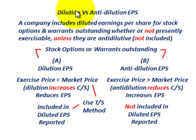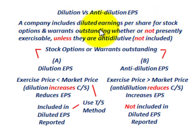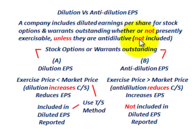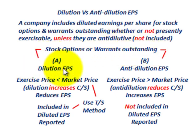First, we have to determine the dilution versus anti-dilution of the earnings per share. The company includes stock options and warrants in diluted EPS whether or not they're presently exercisable, unless they are anti-dilutive. Case A covers diluted earnings per share, and case B covers anti-diluted earnings per share.